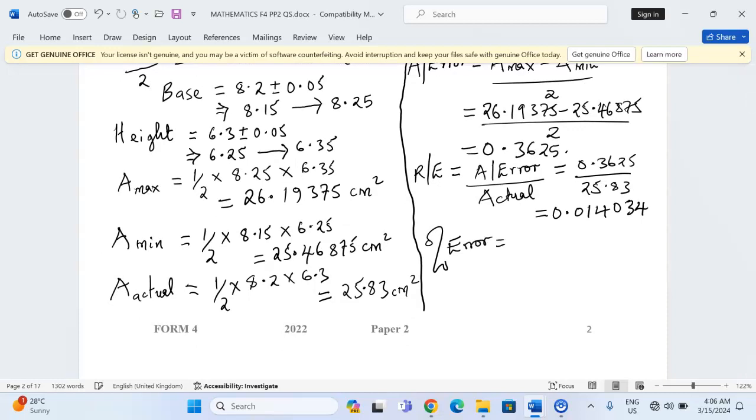And finally, we will have the percentage error. This one is obtained by relative error expressed as a percentage, just multiply it by 100. So when we take 0.014034 and multiply by 100, we're going to get 1.4034.